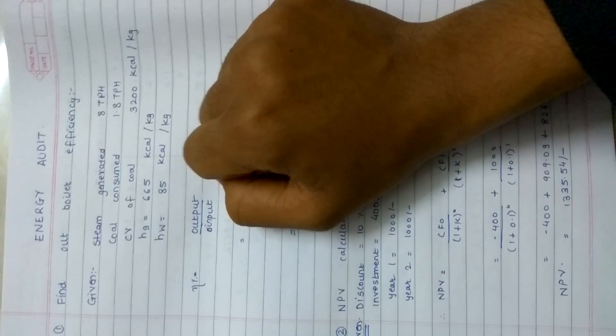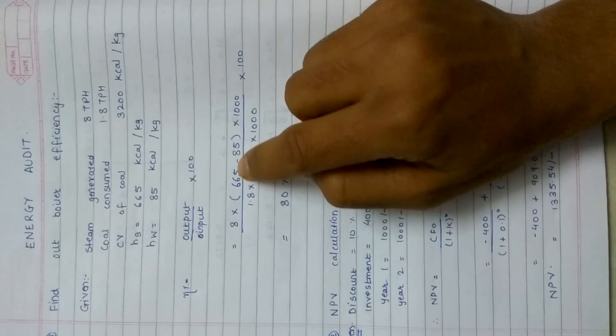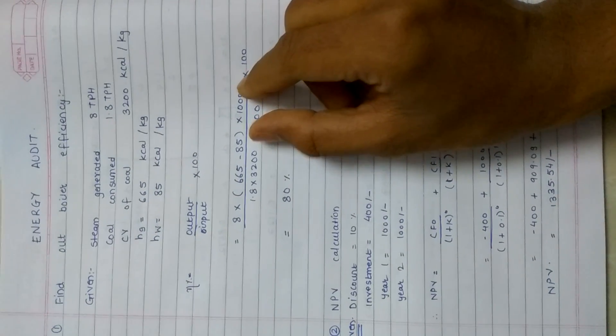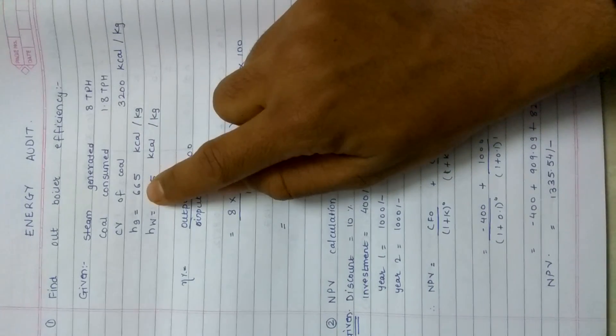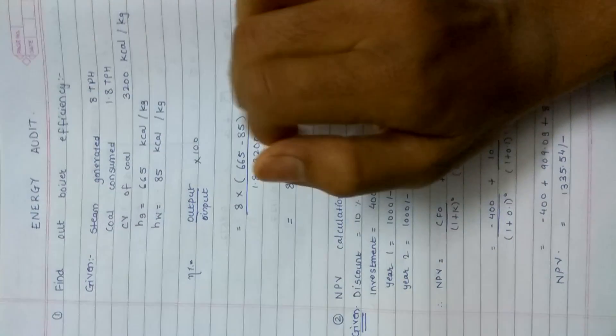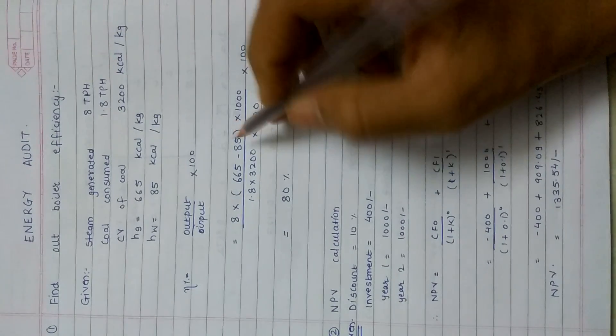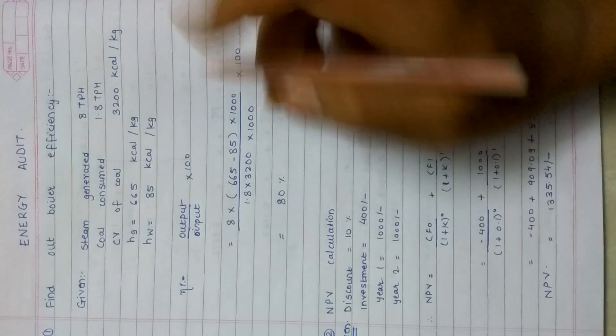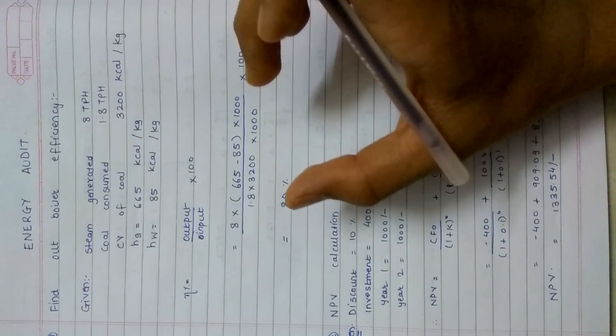To calculate the efficiency: output upon input. Output was 8 ton per hour into difference between the enthalpies, that is the energy consumed, into 1000. I took 1000 to convert ton to kilogram because the value of CV and the value of enthalpy are in kilocalories. Similarly, input is 1.8 ton per hour, that is coal consumed, into 3200 kilocalories (that is CV) into 1000, which equals 80%. So this is the efficiency of the boiler.